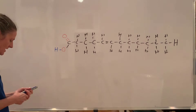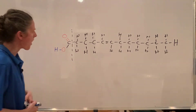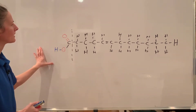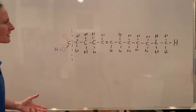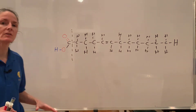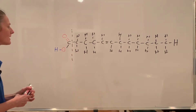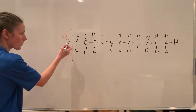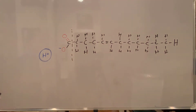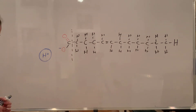The head of the fatty acid has a carboxyl group with oxygens that are polar, so water will interact with the head but not the tail. This is called a fatty acid because it has a hydroxyl on the carboxyl group, and that hydrogen can leave and give its electron behind — making it a carboxylic acid that can donate a proton into solution.